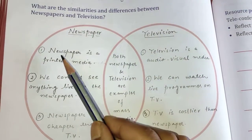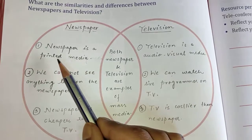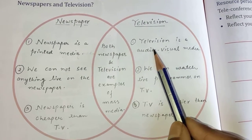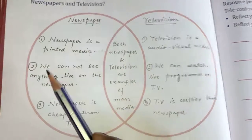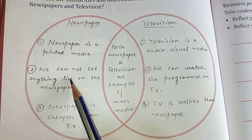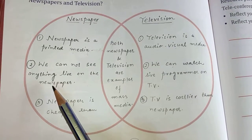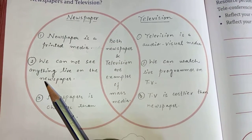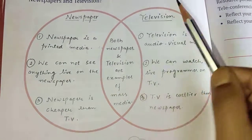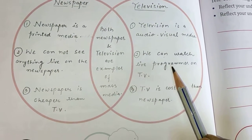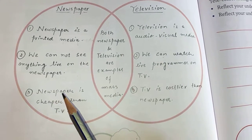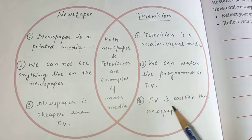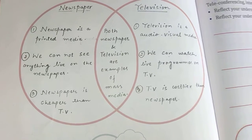Newspaper is a printed media, but television is not — it is an audio-visual media, which we both hear and watch. We cannot see anything live on paper, because the news is printed after the event happens and then the newspaper arrives. But on television, we can watch live programs. Also, newspaper is cheaper than TV, while TV is costlier than a newspaper.